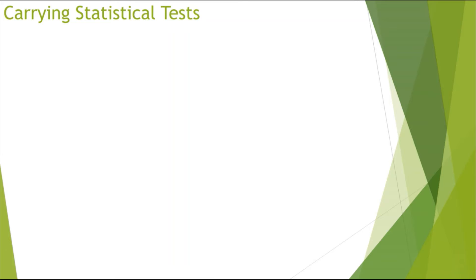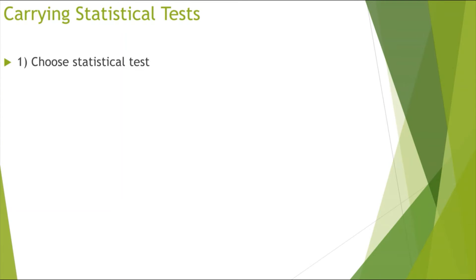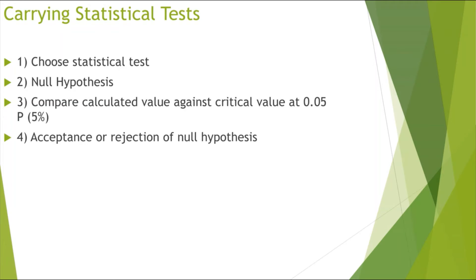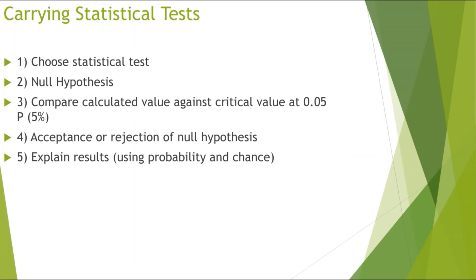Now carrying out a statistical test: first, we choose a statistical test based on the data we've been given. Then we create our null hypothesis, which will be dependent on the statistical test chosen. Then we compare the calculated value against the critical value at 0.05p or 5% chance of it occurring. Then we either accept or reject our null hypothesis, and finally explain our results using the words probability and chance.